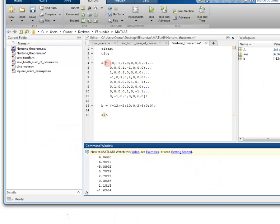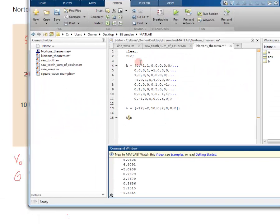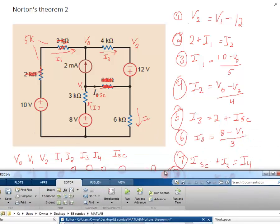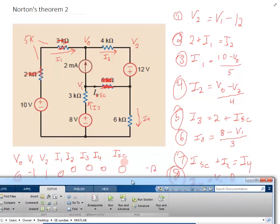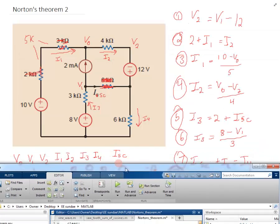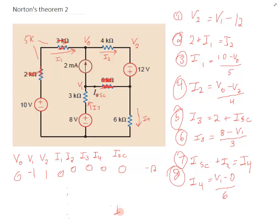So I'm going to use MATLAB to solve this. A is our matrix that we're going to solve. So you can see the first line, 0, negative 1, 1, all zeros, and negative 12. We solve this matrix, and we solve for all our variables. The only one we really care about is I short circuit. So we look at the bottom and we see negative 1.64. So I short circuit equals negative 1.64 milliamps.